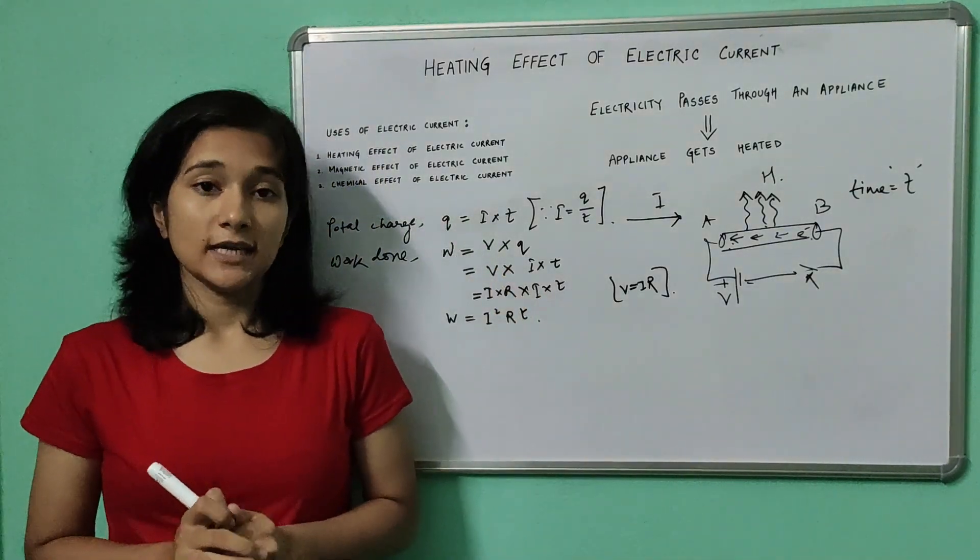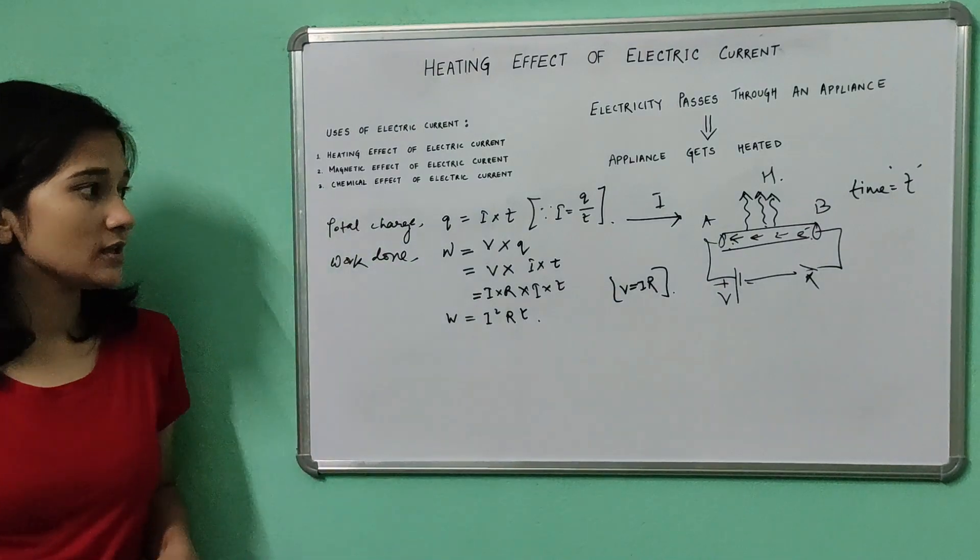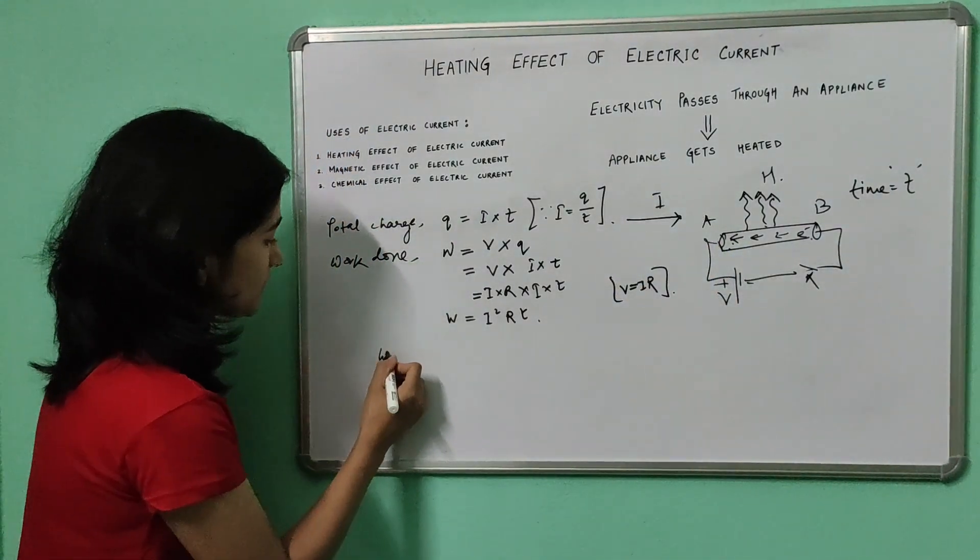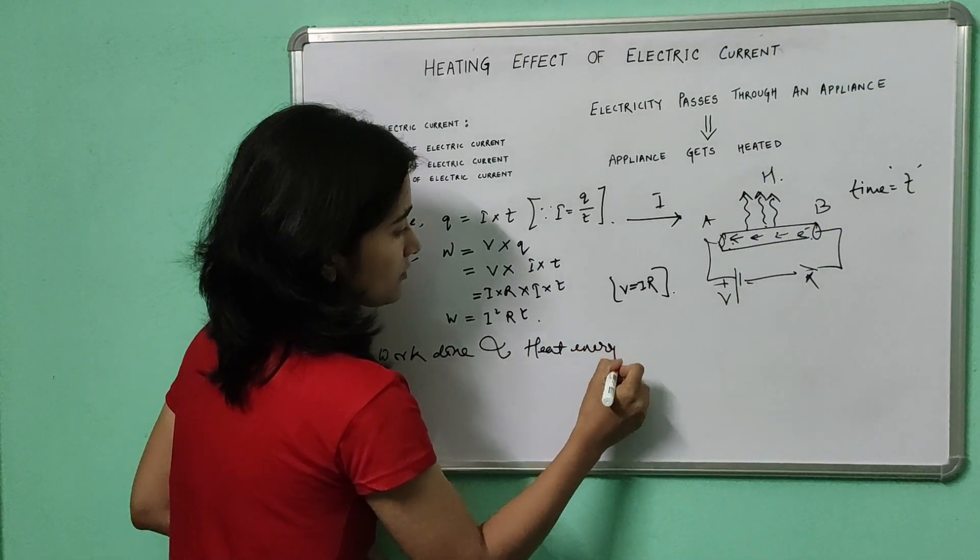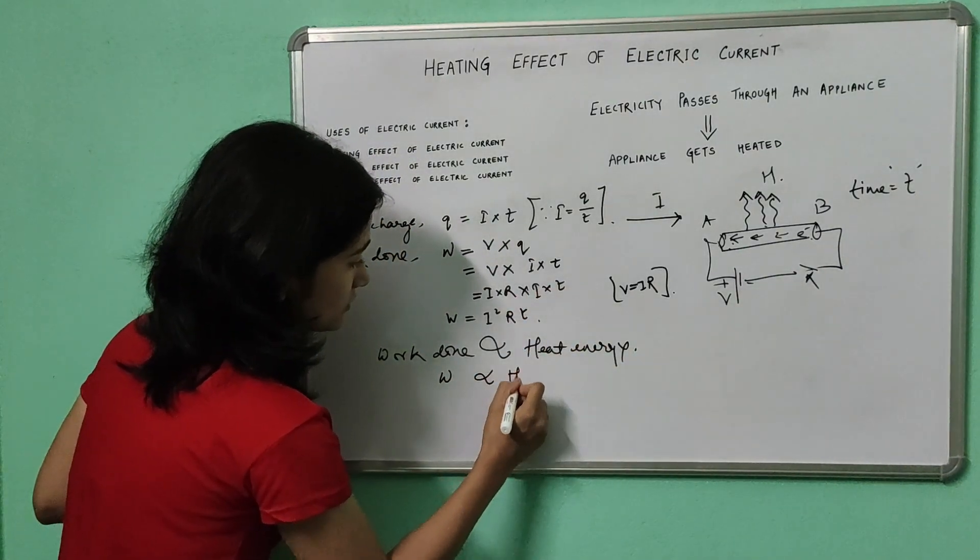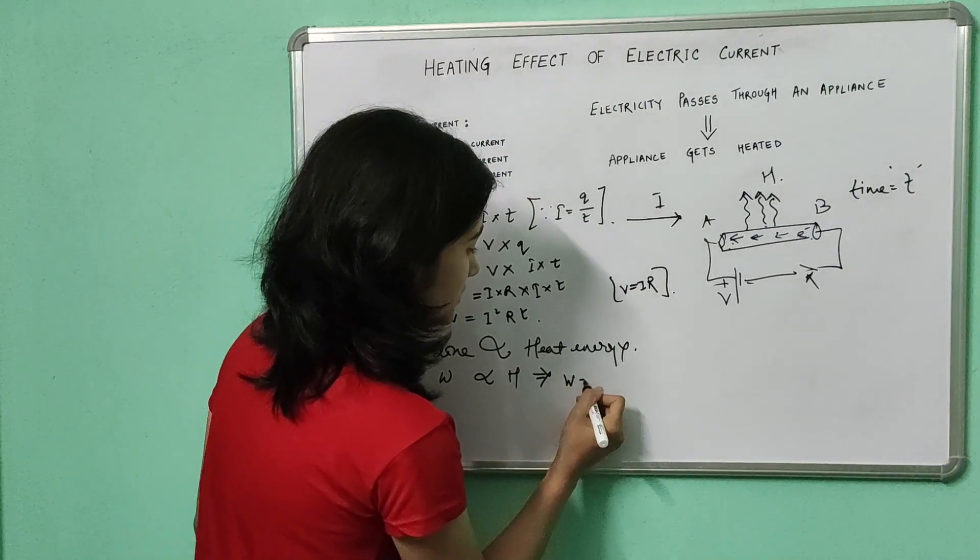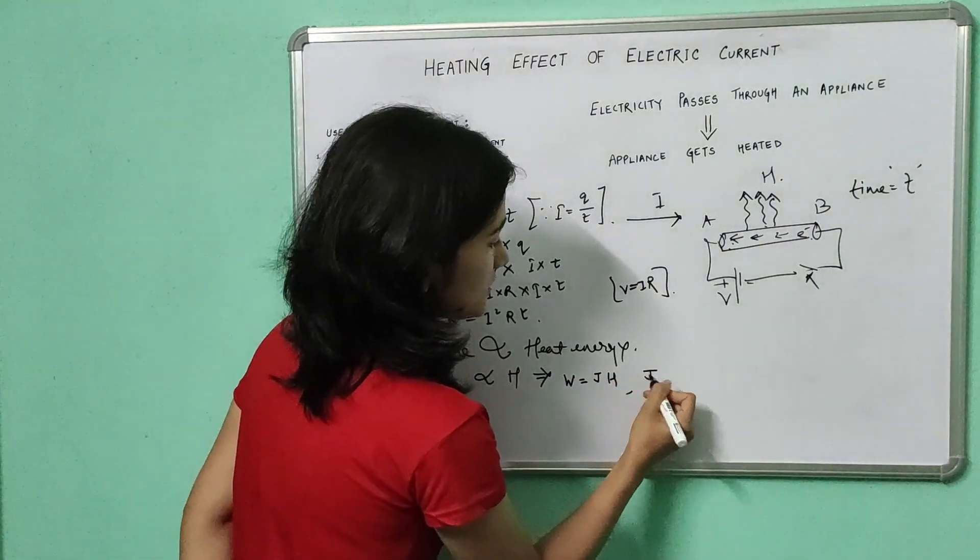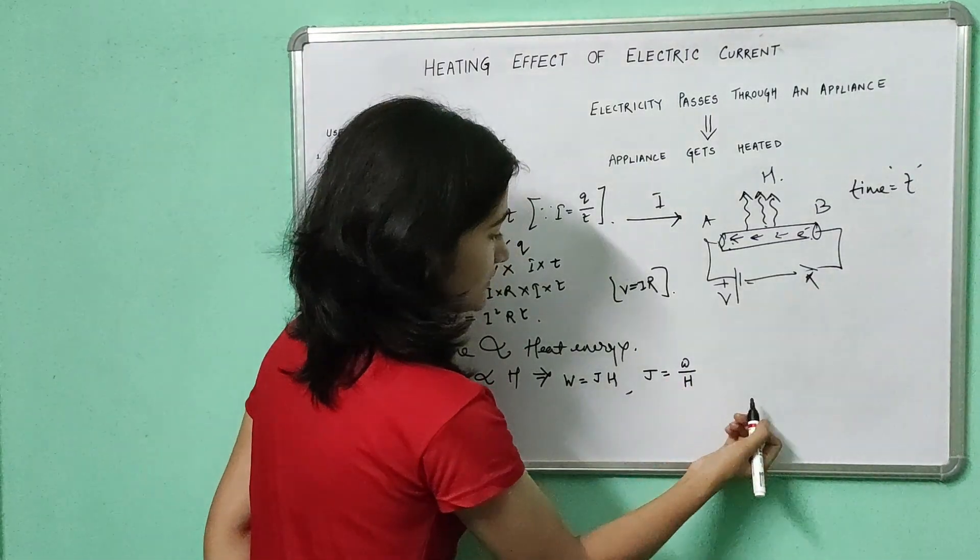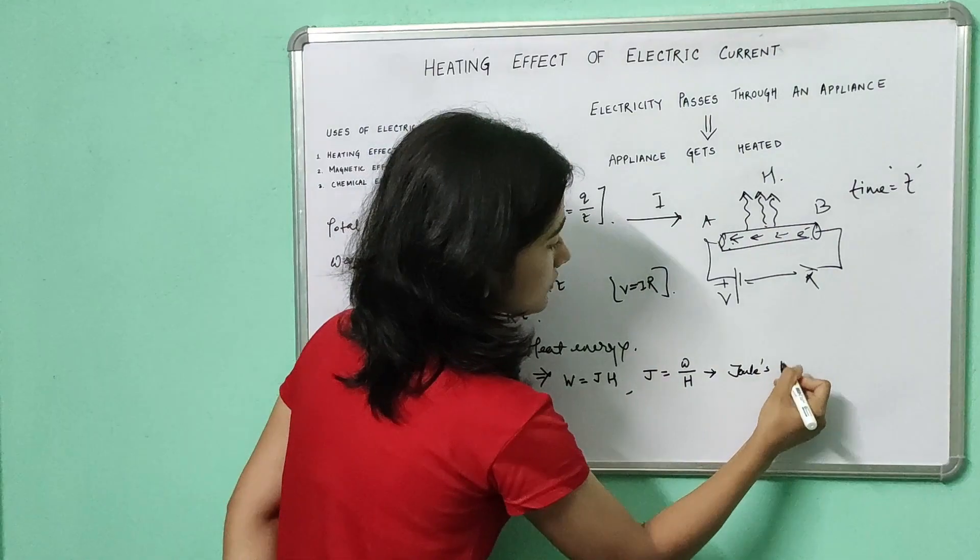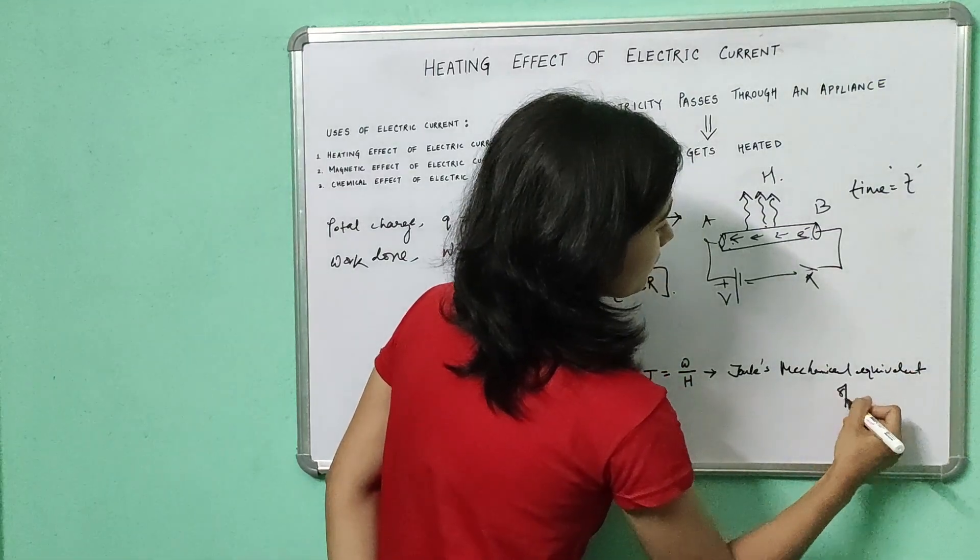Now the work done by any system is always directly proportional to the heat liberated by the system. Here the system is a conductor or an appliance. So we can write work done is proportional to the heat energy liberated. So W is proportional to H. If we remove this proportionality constant and replace it by capital J, then we can write W is equal to J into H. Here J is nothing but the ratio of the work done divided by the heat energy liberated by the system and is known as Joule's mechanical equivalent of heat.